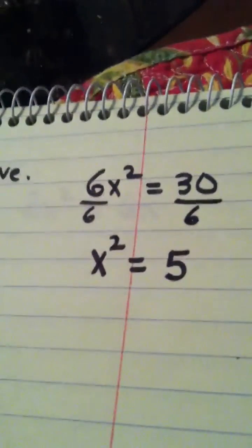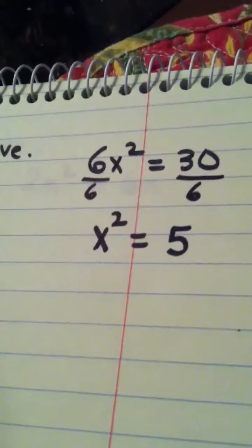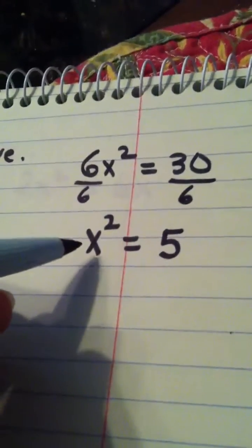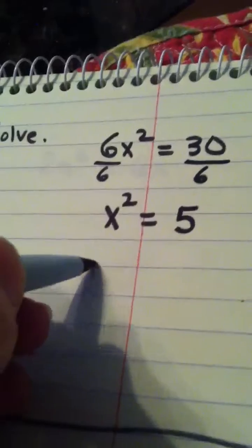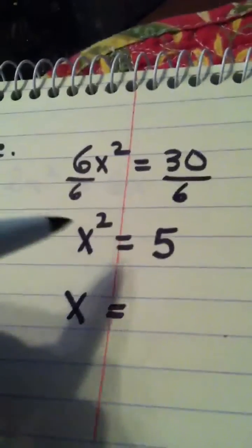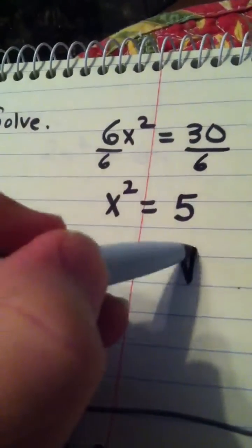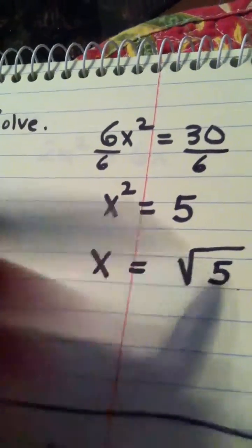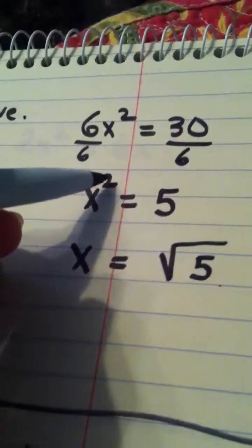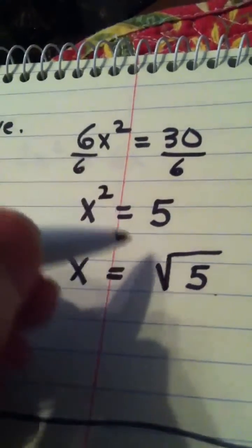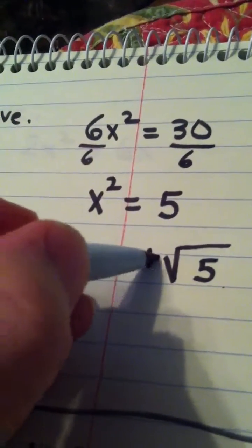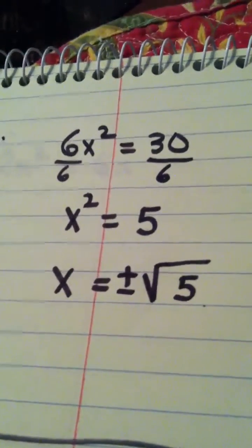Now I apply the square root property. When I apply the square root property, this side simply becomes x. And on this side, you do two things. You take the square root of 5, because of course to undo squaring, you square root. And you also allow for the fact that there are two answers, both the positive and the negative.